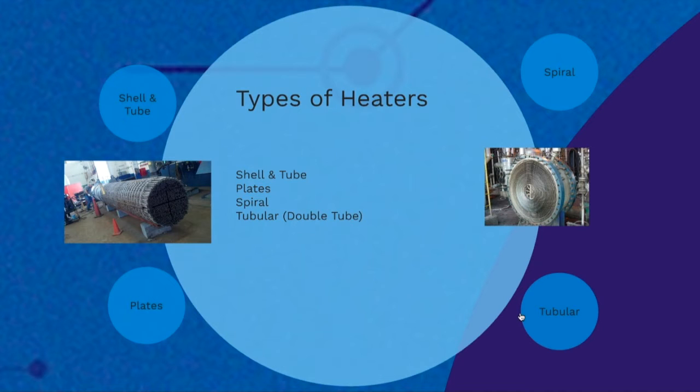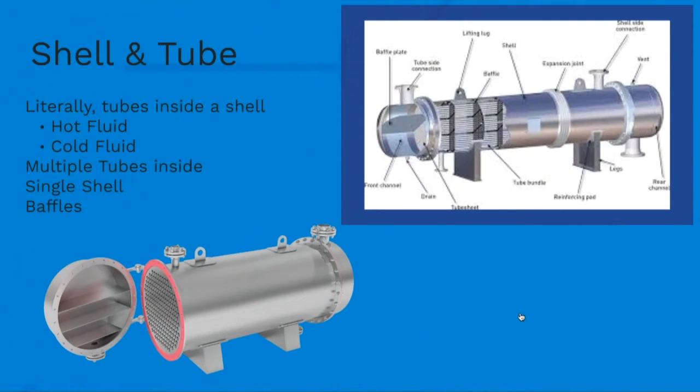Let's go for the first one, shell and tube. As the name implies, there's a large shell covering all the inside tubes. Typically you'll have many tubes—20, 100, 500, etc. The more tubes, the more control and heat exchange, but it's also more expensive and harder to maintain.